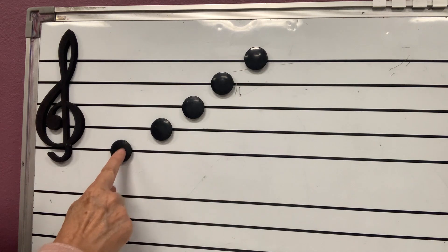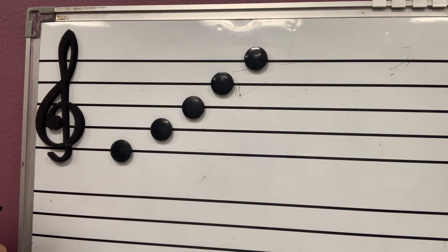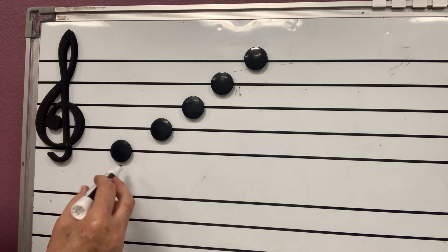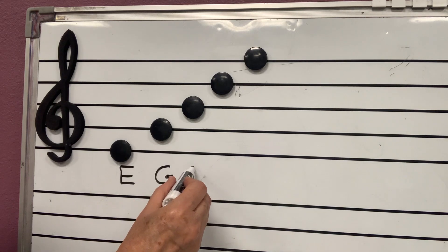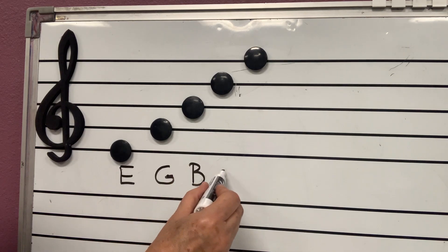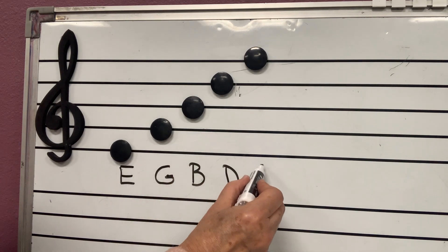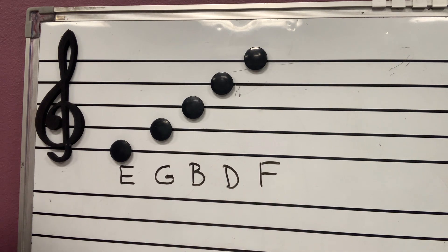One, two, three, four, five lines. Now, we know the first line is E. And we know the second line is G. We already know those. Well, this is going to be a B. This one is going to be D. And this one is going to be F. E, G, B, D, F.